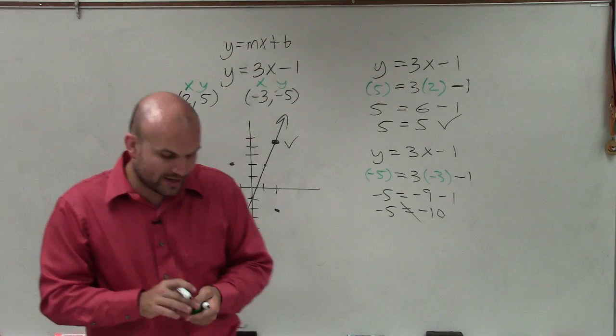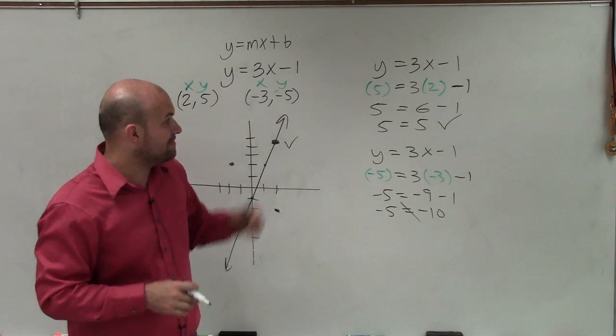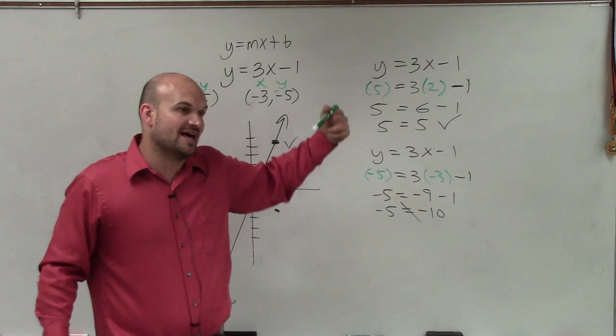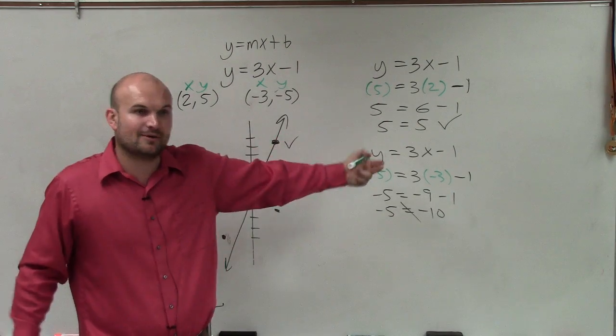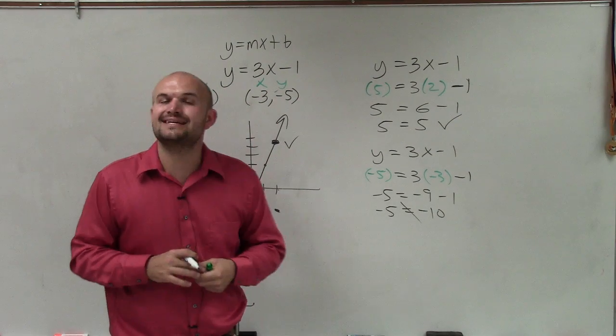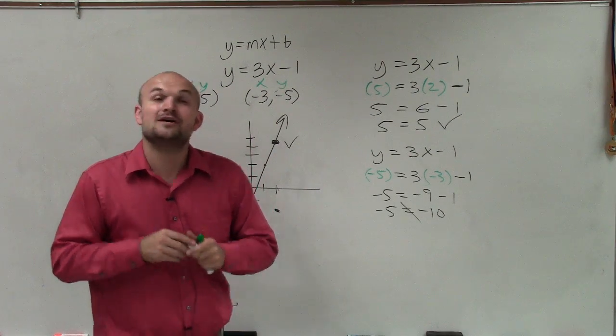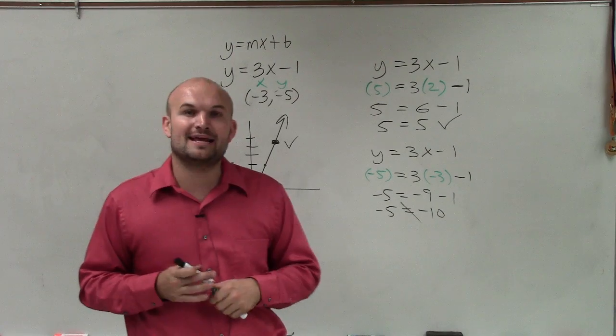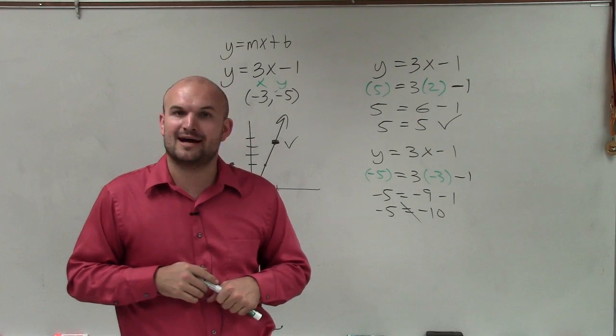So again, to make sure, when you know a point is on the line, that means when you plug in those values or the coordinate points x and y into the equation, it's going to make the equation true. When it's not on the line, when you plug those points into the equation, it's going to make your equation false. So there you go, ladies and gentlemen. That is how you determine if a point is on your line or not. Thanks.